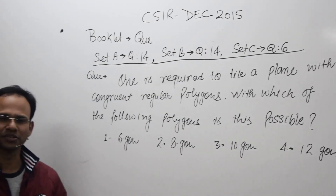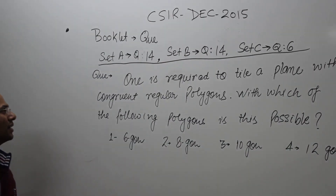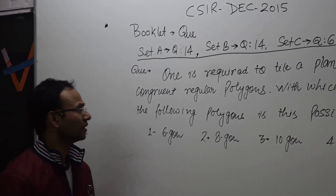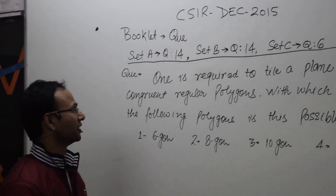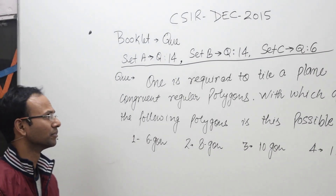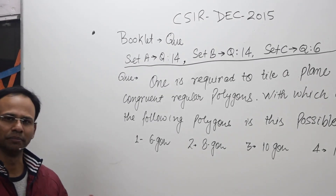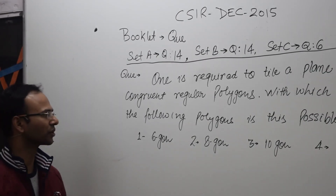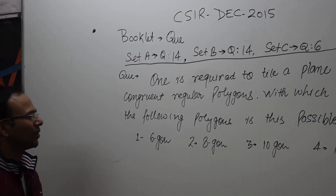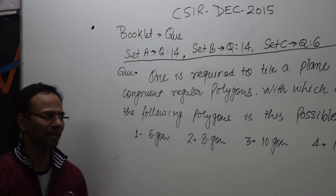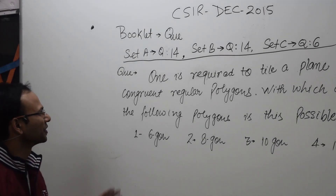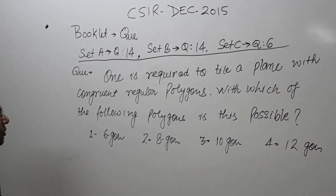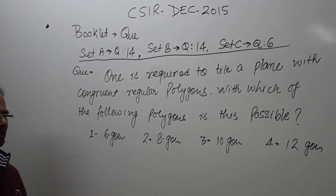Let's discuss this question. The question came in part A section — question number 14 for booklet A, question number 14 for booklet B, and question number 6 for booklet C. The question is: one is required to tile a plane with congruent regular polygons. With which of the following polygons is this possible?